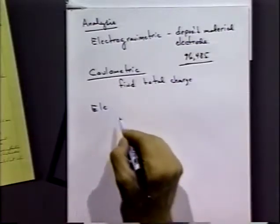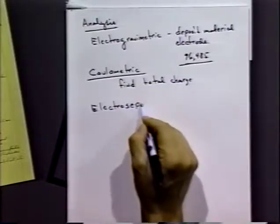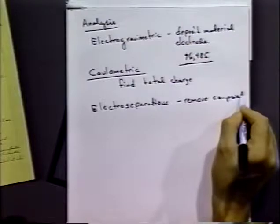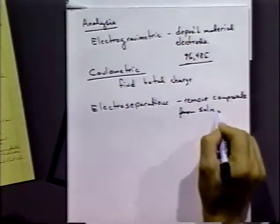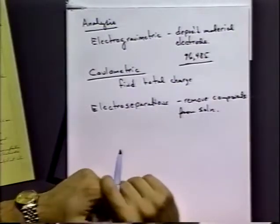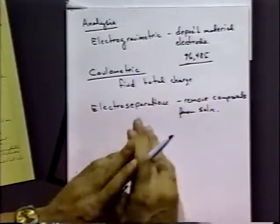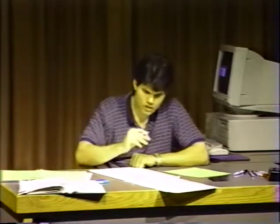The other major use of bulk electrolysis is electro separations, where we're trying to remove components from solution. It's used quite a lot for what's called a pre-electrolysis step, where you electrolyze your solution for a long period of time to strip out metal impurities. It's often used in very careful experiments to remove impurities. You can also send your solution flowing through a plug of porous electrode material to strip out materials as a pre-step.